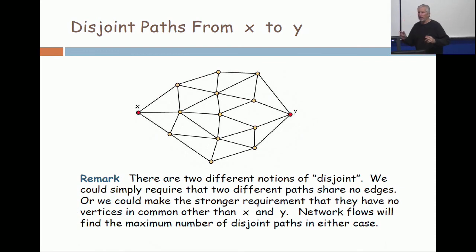Now, network flows will solve both of these problems. Both of them. The edge version is done with the trivial change that all you do is consider this as a digraph with an edge over and an edge back for every pair except x and y. x only points out and y only points in. Then you turn on Ford Fulkerson and come back and you will have the maximum number of edge disjoint paths.